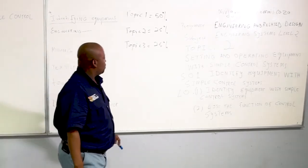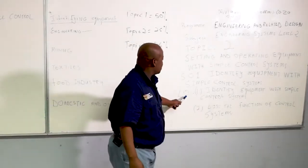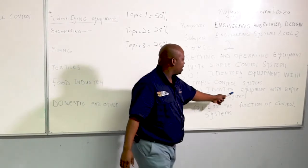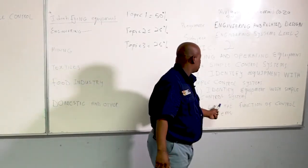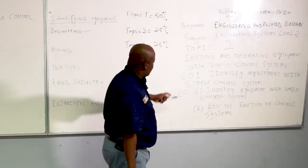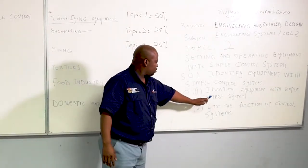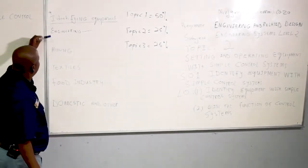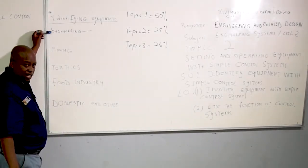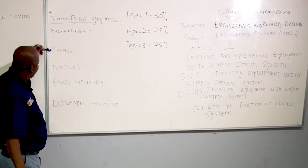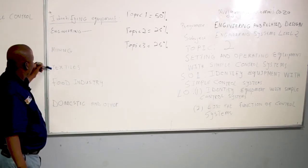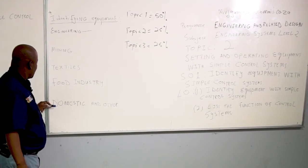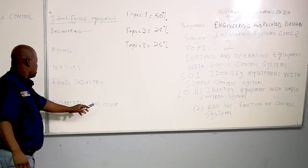Now I want us to go to the learning outcomes. Learning outcome number one says we should identify equipment with simple control systems. These equipment with simple control systems are categorized in different sectors. We have engineering, we have mining, we have textiles, we have food industry, and other domestic sectors.